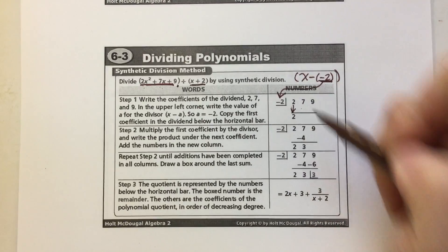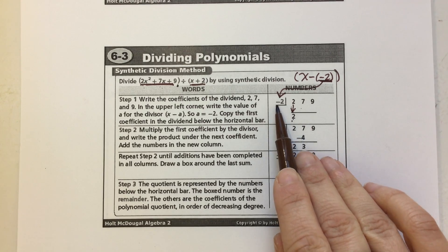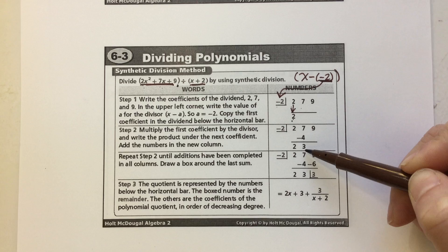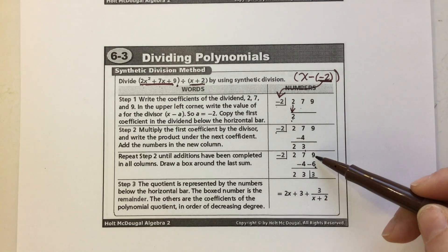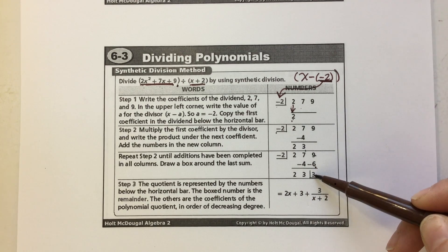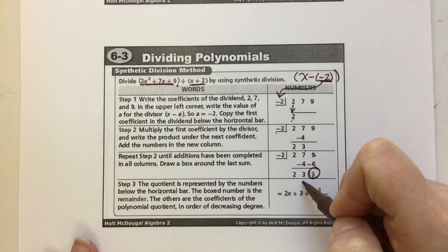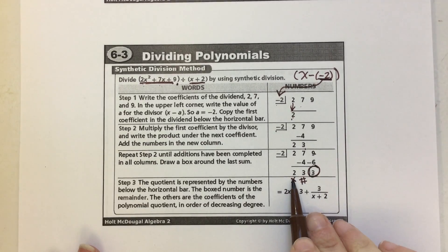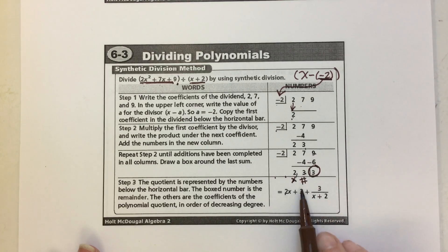You always drop down the first term. Take the bottom number times the number in the box: 2 times negative 2 is negative 4. Add: 7 plus negative 4 is 3. Take 3 times negative 2 to get negative 6. Add: 9 plus negative 6 is 3. The last number is always the remainder. Next to that is your constant, next would have 1x, then 2x's, 3x's, 4x's. So this problem is 2x plus 3, with a remainder of 3 over x plus 2.